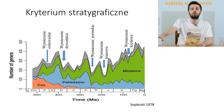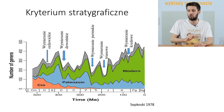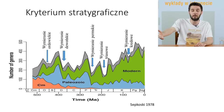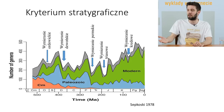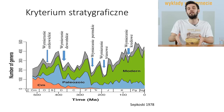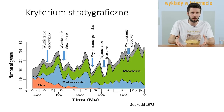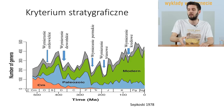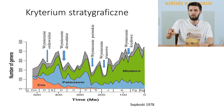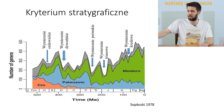Większość stabilomorfów przetrwała wymieranie kredowe, ale będą też takie, które przetrwały więcej wymierań - i triasowe, i kredowe, i permskie. I teraz zrobimy przegląd przez te grupy organizmów powszechnie uznawane za żywe skamieniałości. Przetestujemy kryterium taksonomiczne i stratyraficzne, żeby sprawdzić, czy te żywe skamieniałości spełniają definicję stabilomorfizmu. Głównie skupiłem się na zwierzętach, ale na końcu wspomnę słówko o roślinach.